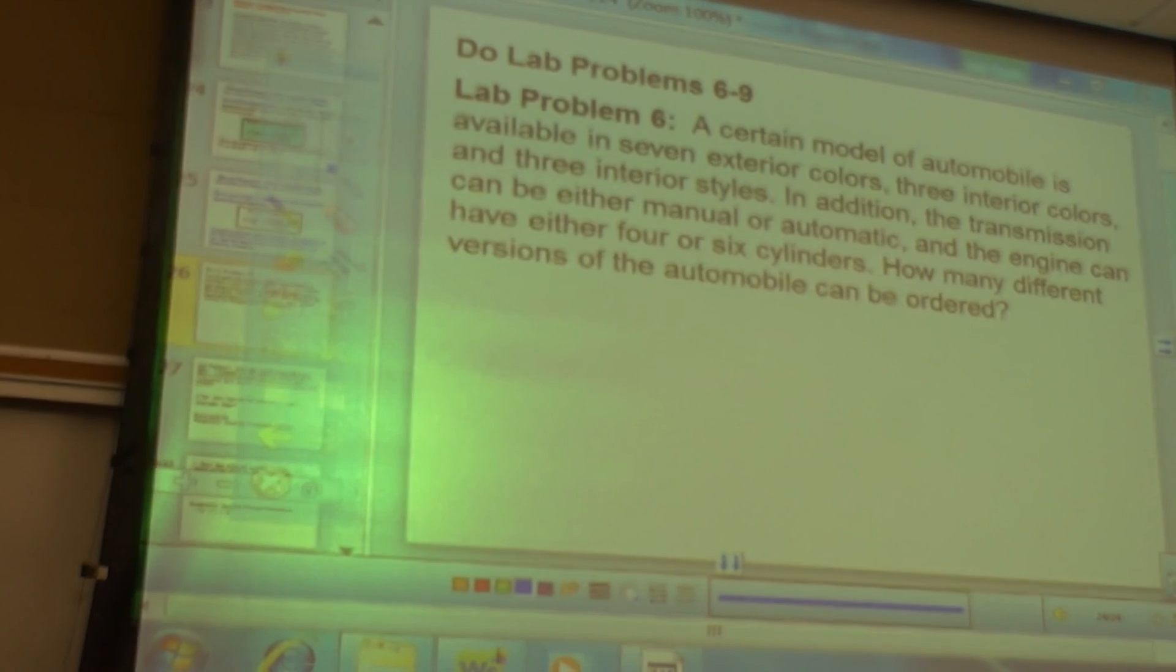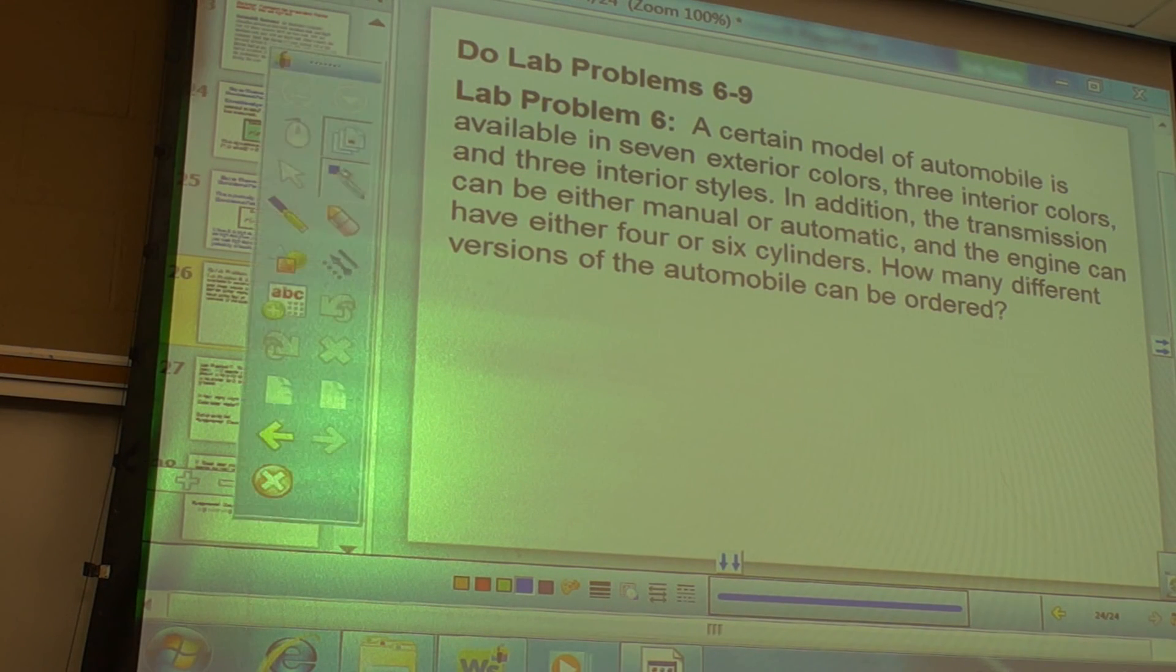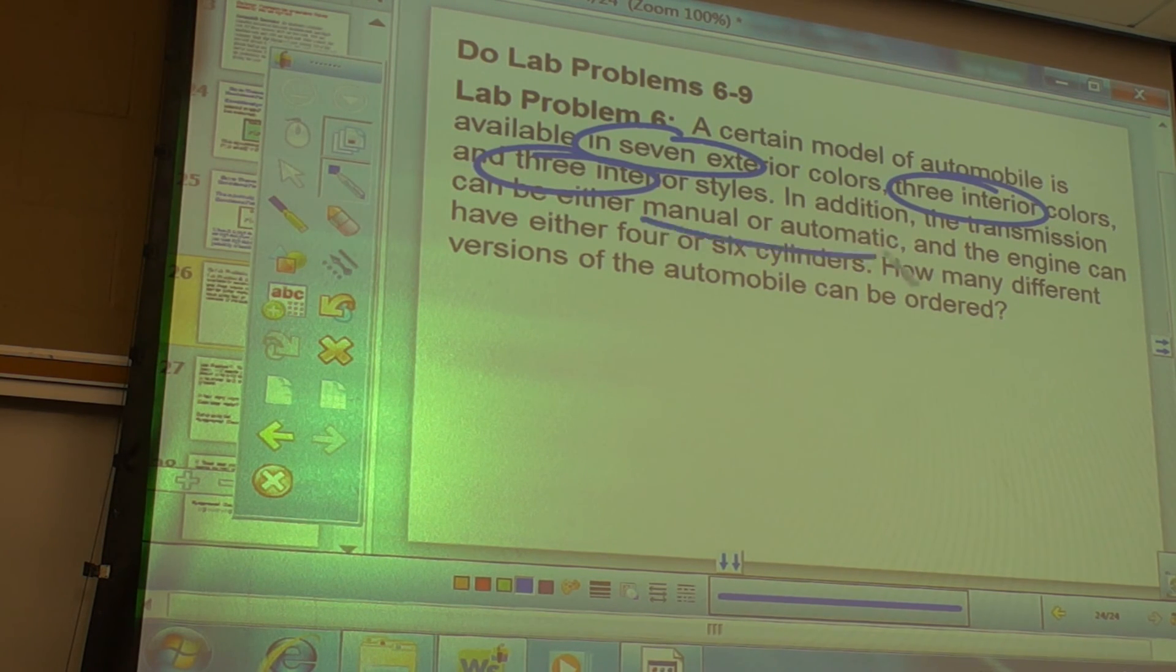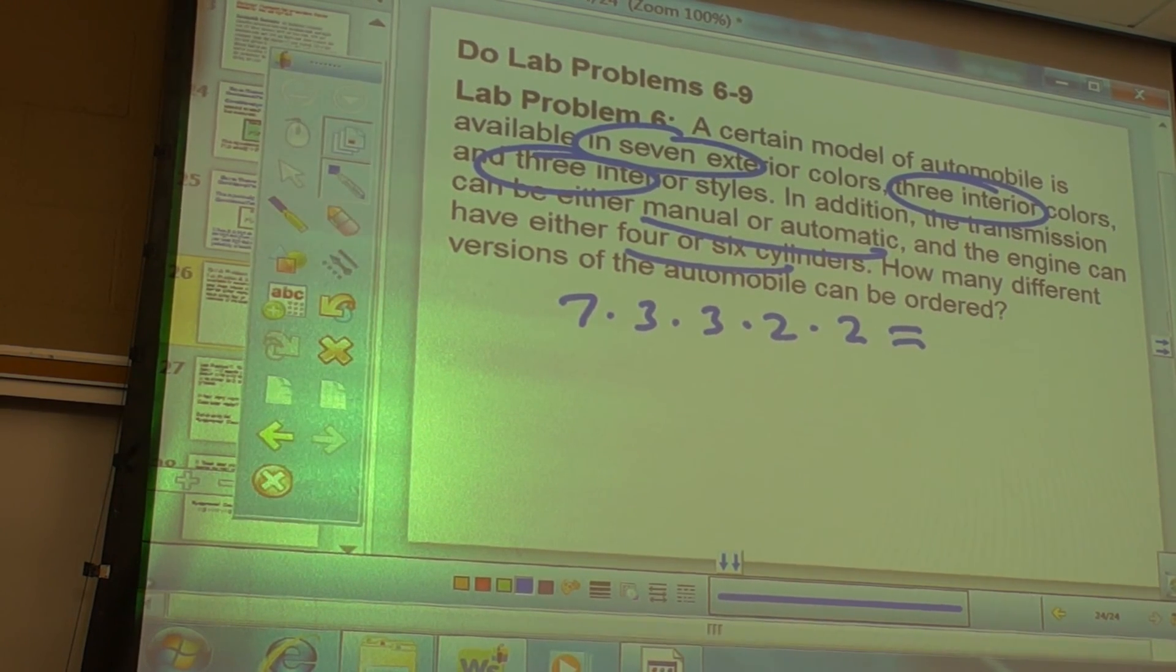Alright, so I'm going to go over these just so people have the answer. I've got a minute, so this is good with me. Alright, so we have 7 exterior colors, 3 interior colors, 3 interior styles, manual automatic, and 4 6 cylinders. So 7, 3 to those you have 3 options, 3 to those you have 3 options. And after that you have 2 options of, you have a type of transmission and then 2 types of cylinders. So it's always an option and you're going to multiply them. Alright, and again, if you can't remember if you multiply or add, just go back to like 2 pants and 4 shirts. And go through and figure out how many options I give you.